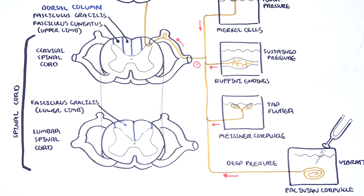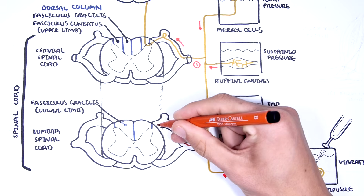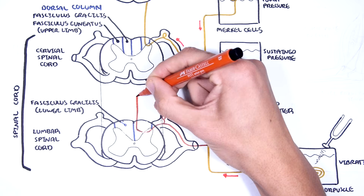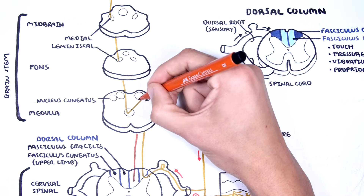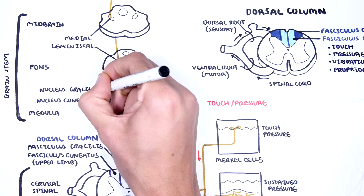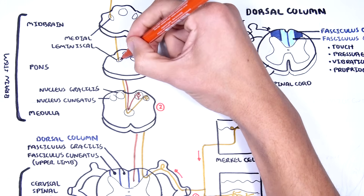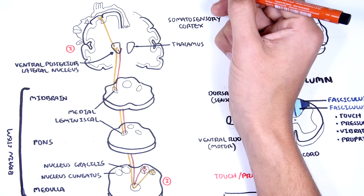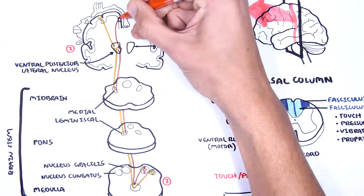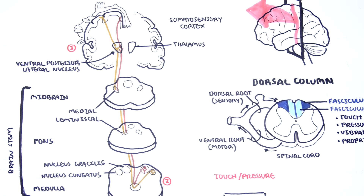If this first-order neuron is carrying sensory information from the foot and lower leg, it will enter the dorsal column from the dorsal root of the spinal cord and travel up the fasciculus gracilis towards the medulla, where it will synapse with the second-order neuron at the nucleus gracilis. The second-order neuron will cross over at the midline of the medulla and travel up the medial lemniscal tract to the contralateral ventral posterior lateral nucleus of the thalamus. The third-order neuron then carries sensory information to the region of the somatosensory cortex representing the foot and leg.